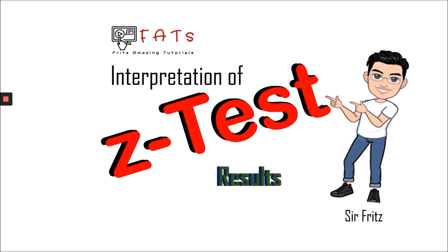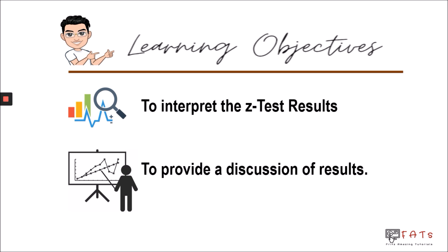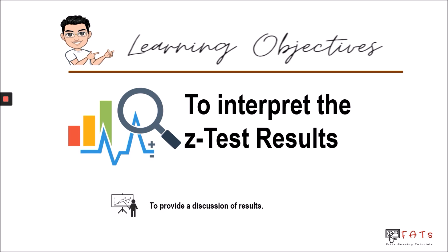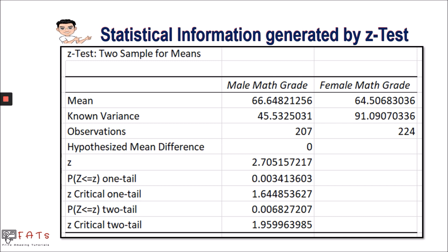Hello guys, today's episode we will talk about the interpretation of z-test results. We have two objectives: to interpret the z-test results and to provide a discussion of those results. In our previous video, we performed the z-test analysis to determine if there is a significant difference between the math grades of male and female students. Now we will use the output of the z-test to interpret that statistical information — and here is the output of that z-test.